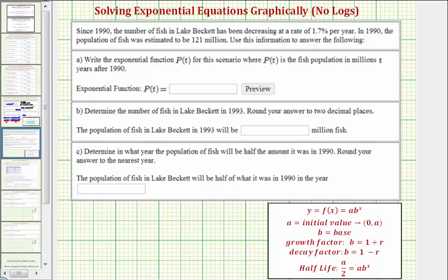Our exponential function is going to be in the form of p of t equals a times b raised to the power of t. Looking at our notes, if we have an exponential function in this form, a is the initial value or starting population at time t equals zero. Since t is the number of years after 1990, in our case, a is going to equal 121 since p of t is in millions.